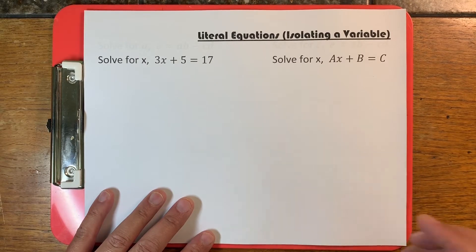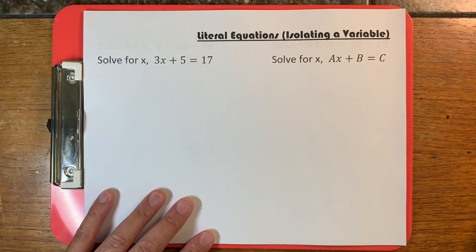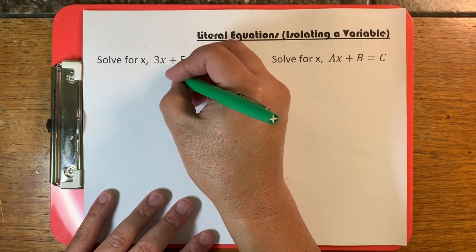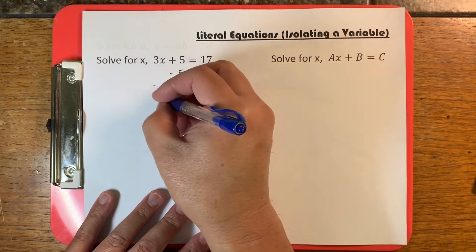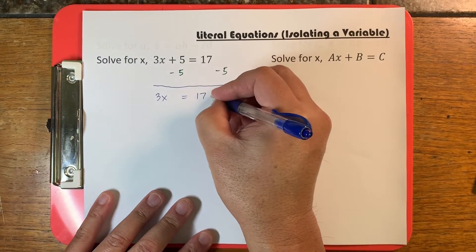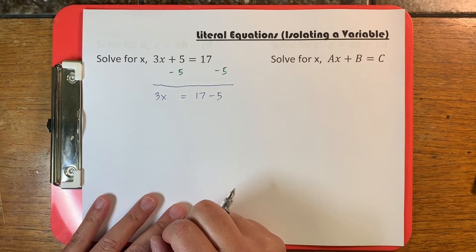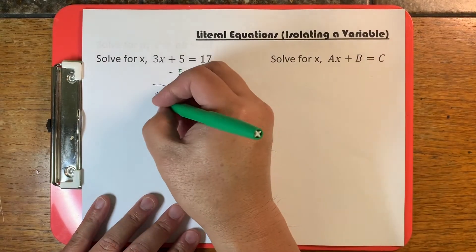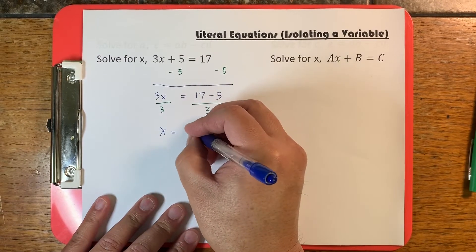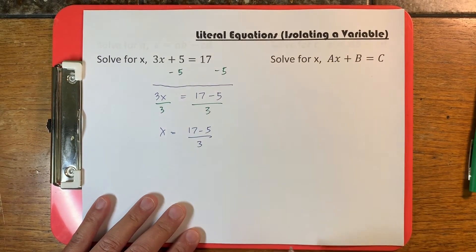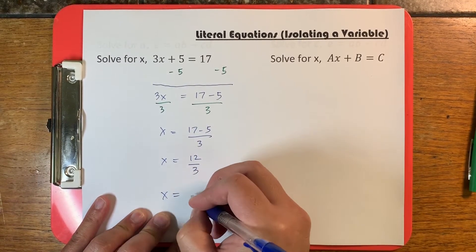Let's look at something familiar. If I were to ask you to solve 3x + 5 = 17, the first thing you would do is get rid of that 5 by subtracting 5 from both sides. We get 3x is equal to 17 minus 5. Then we divide both sides by 3, and we get x is equal to 17 minus 5 divided by 3, which gives us 12 divided by 3, so x equals 4.